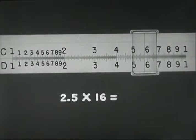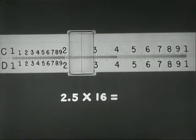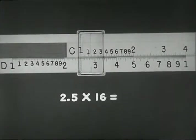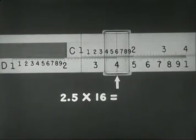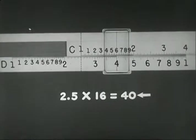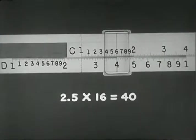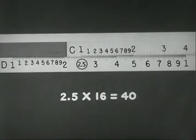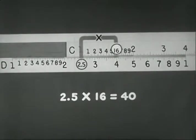To multiply 2.5 by 16, for example, first find 2.5 on D, and to it slide the index of C. Move the hairline to 16 on C, and read the answer 4.0 under the hairline on D. The ciphers and decimals required by the problem are of course placed mentally. The procedure may be diagrammed like this: 2.5 times 16 equals 40.